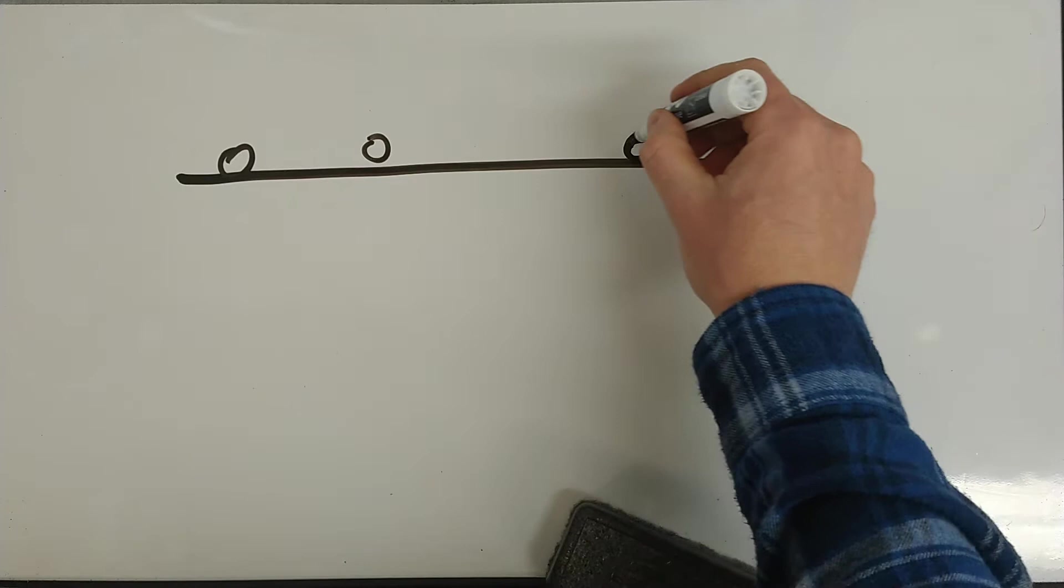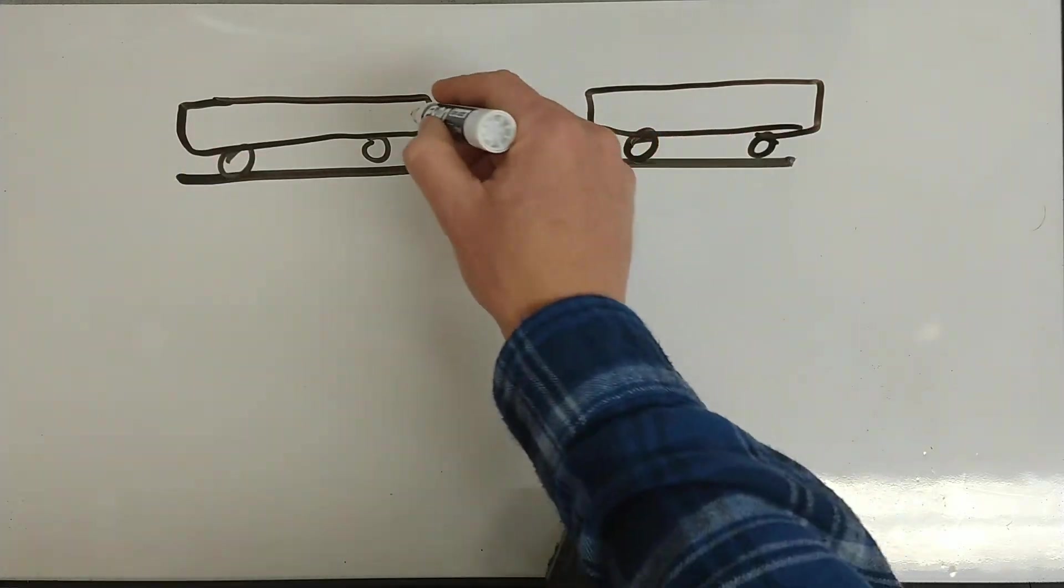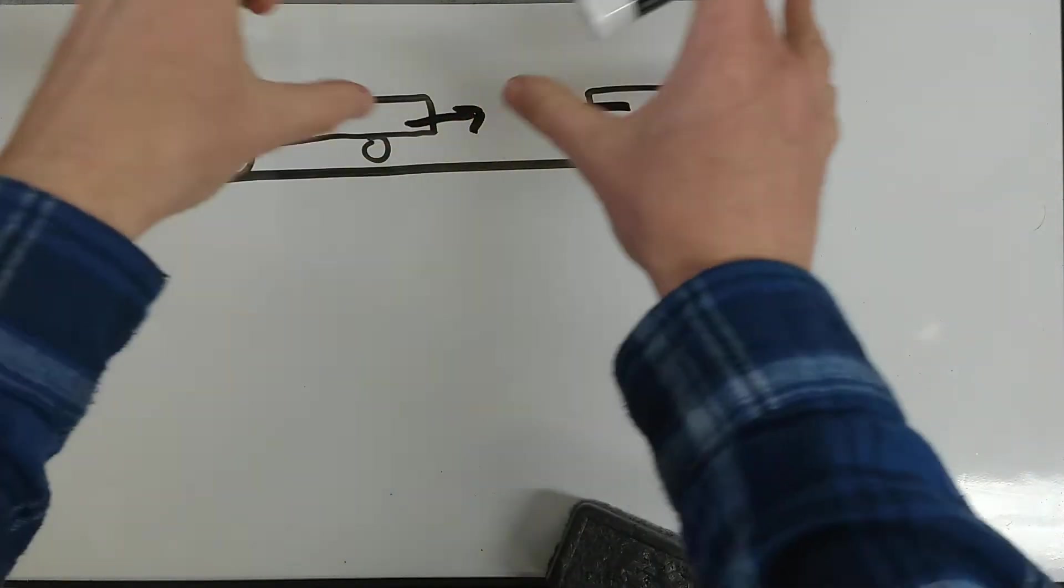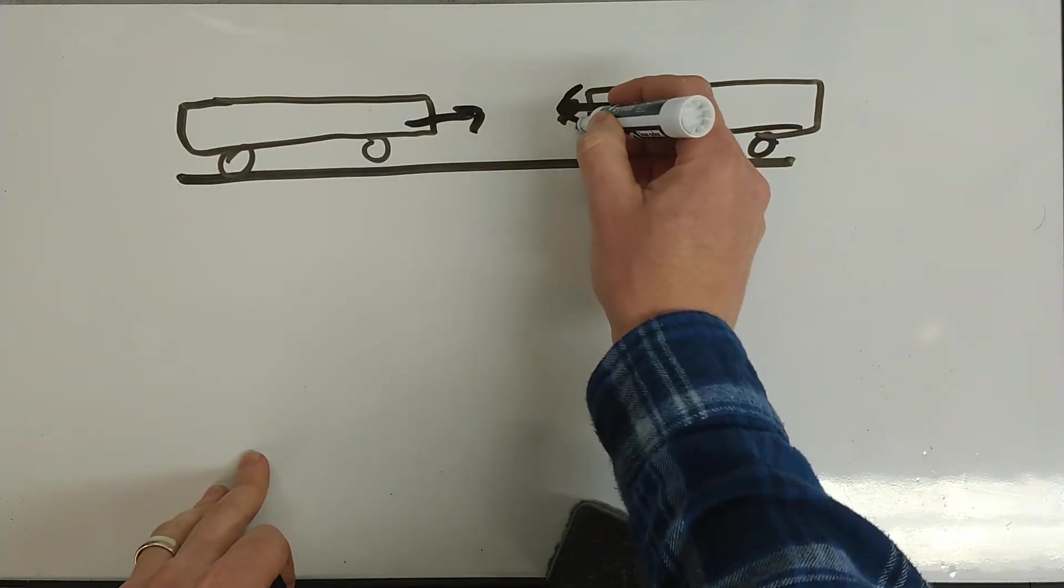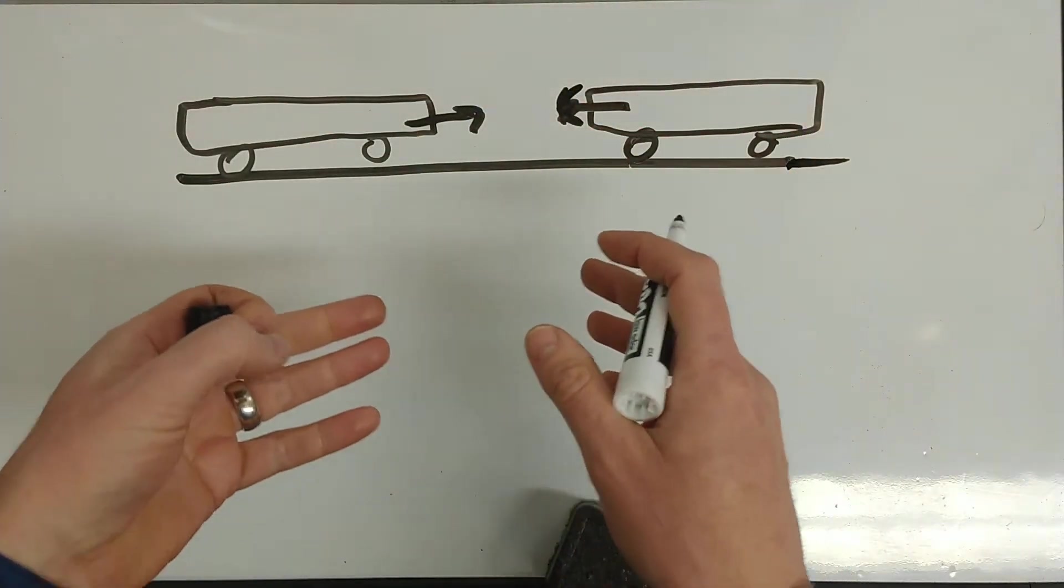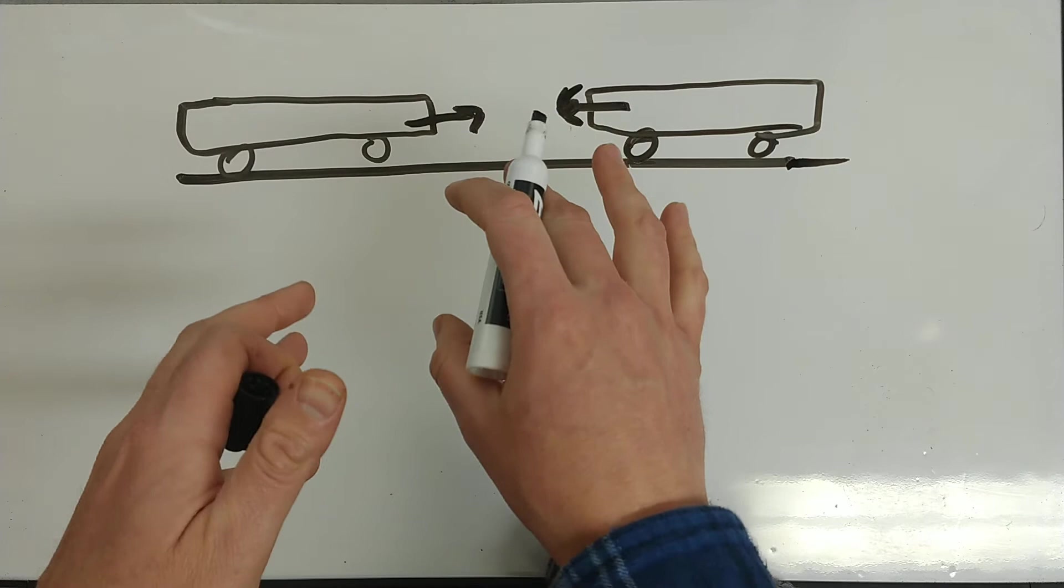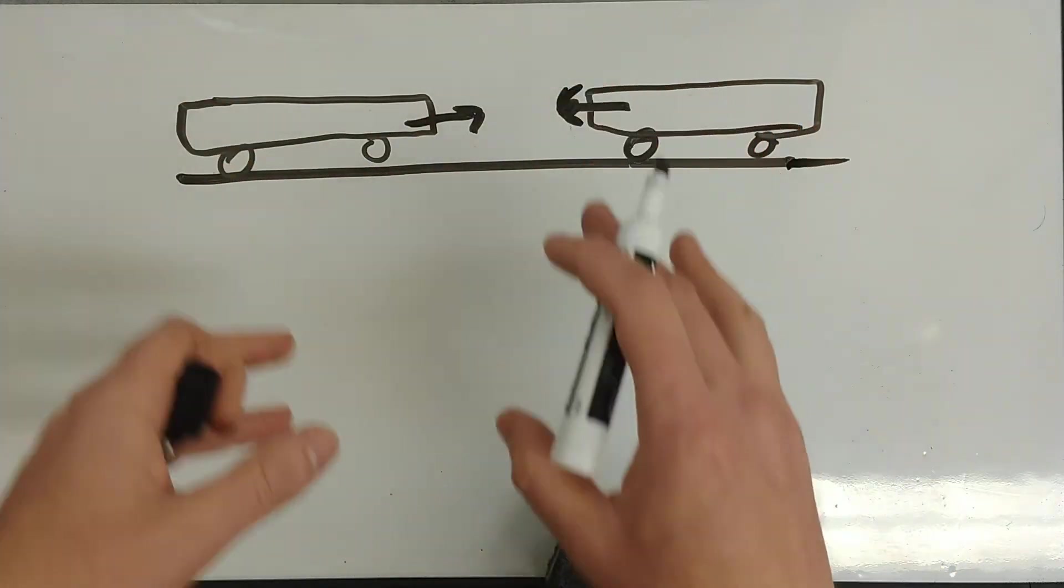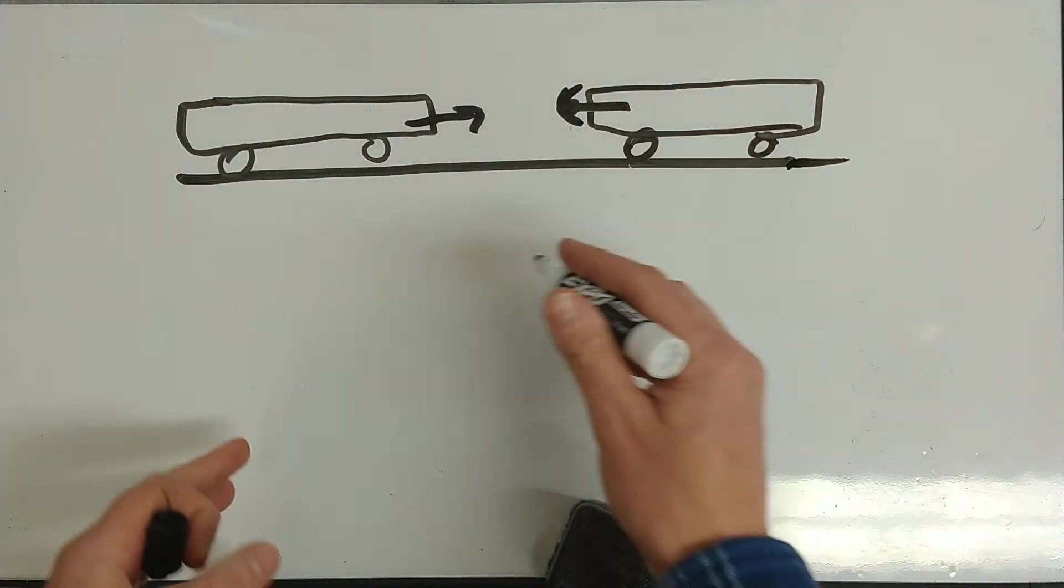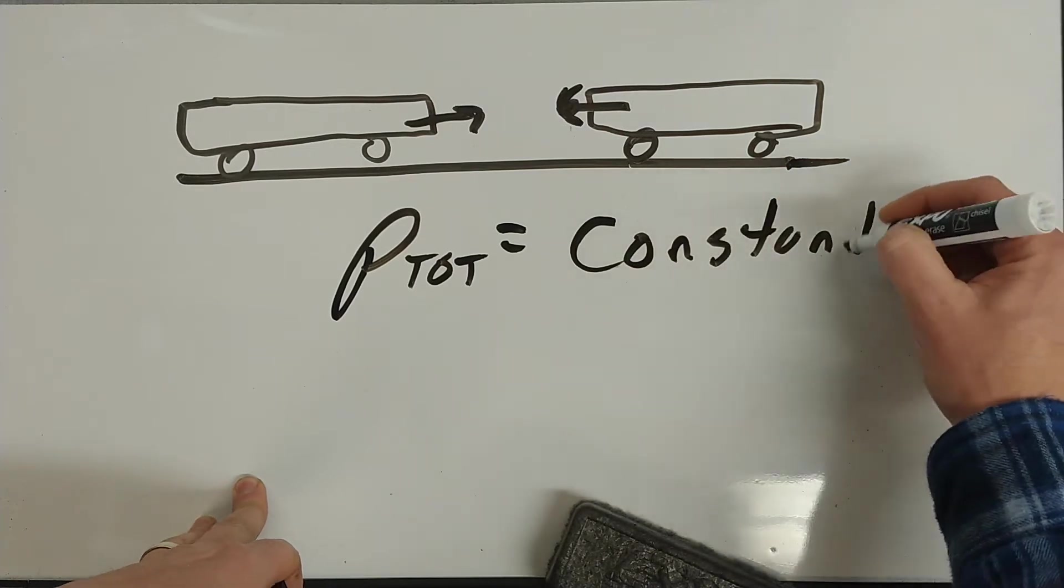If you have two objects, like carts on tracks that we'd use at school, smashing them into each other and bouncing off, what's cool is if you figure out the total momentum of this system before any interactions with each other—the system is the two carts, the ground, everything—as long as there's no outside forces acting like friction, air drag, whatever outside push or pull, the total momentum of the system will remain constant.